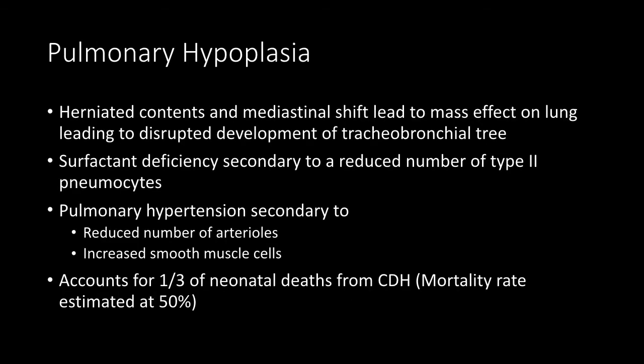The most significant of these anomalies probably has the largest effect on patient outcomes. Abdominal contents having this abnormal presence in the thoracic cavity will cause a mass effect on the lung, leading to disruptive development of the tracheobronchial tree. Surfactant deficiency can occur because there will be a reduced number of type 2 pneumocytes. Pulmonary hypertension can also occur due to a reduced number of arterioles and an increase in smooth muscle cells, which decrease the diameter of the pulmonary vasculature and increase resistance. Pulmonary hypoplasia accounts for one-third of neonatal deaths from CDH. The mortality rate of CDH is estimated to be 50%.